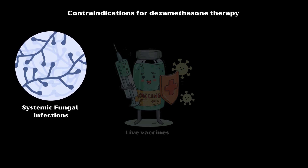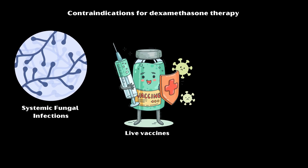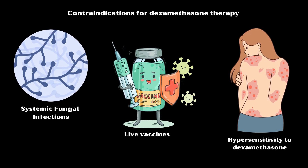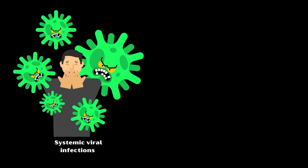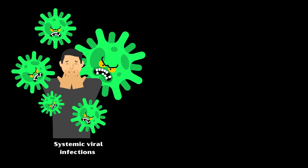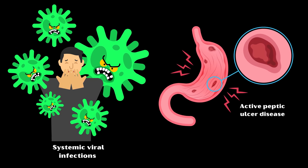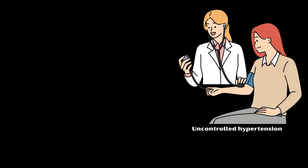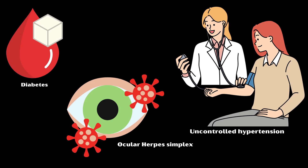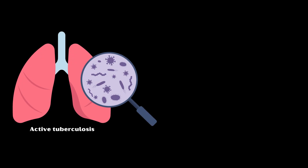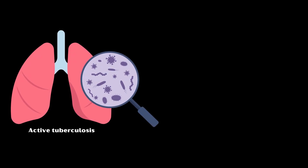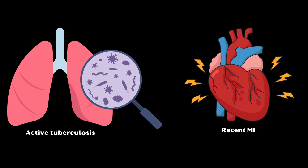Contraindications for dexamethasone therapy include the following: systemic fungal infections, live vaccines, hypersensitivity to dexamethasone, systemic viral infections, active peptic ulcer disease, uncontrolled hypertension, diabetes, ocular herpes simplex, active tuberculosis, and recent myocardial infarction.